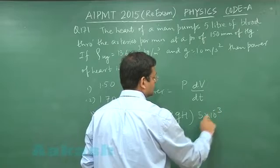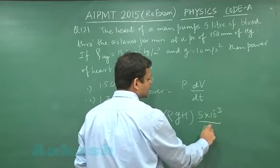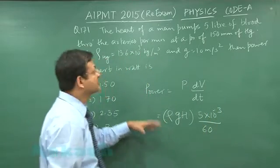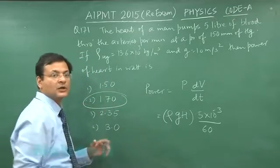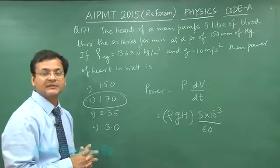This is meter cube per minute, so convert into 60 seconds. You understand? So substitute all these values, you will be getting the value power as 1.70 watt. So that will be the answer to question 171. Switch over to next question 172.